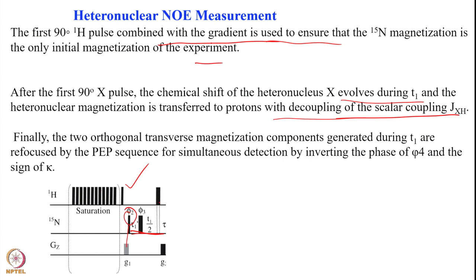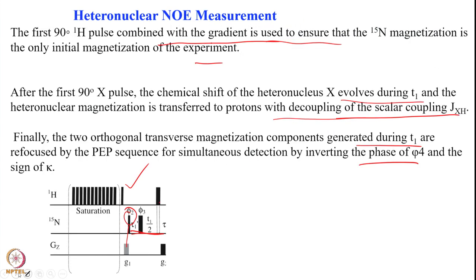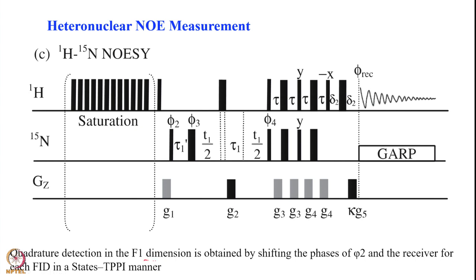The orthogonal magnetization component generated during the T1 period is refocused in the PEP sequence, and we simultaneously detect by inverting the phase. For quadrature detection in the F1 dimension, we shift the phase of the first pulse and the receiver together in a States-TPPI manner. This is the typical way of doing the experiment: saturating the proton, starting with proton, transferring to nitrogen, encoding the T1 frequency, transferring back via PEP, and detecting on the proton with TPPI-based coherence selection.